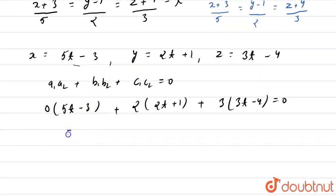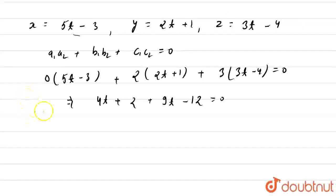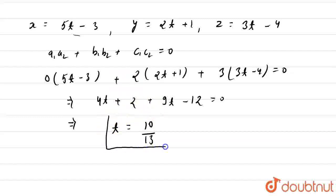You can see (0,2,3) is our point. So now if we multiply them we get 4t + 2 + 9t - 12 = 0, and this gives us t = 10/13.